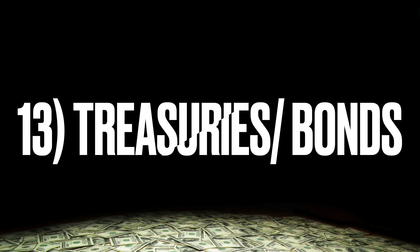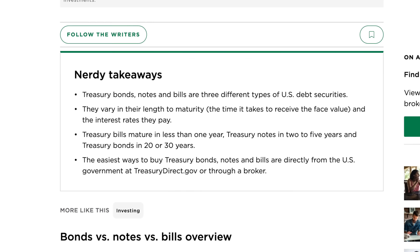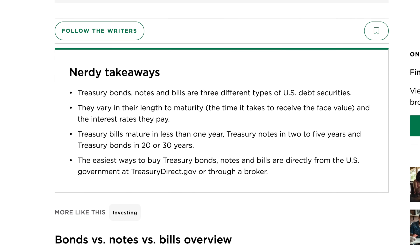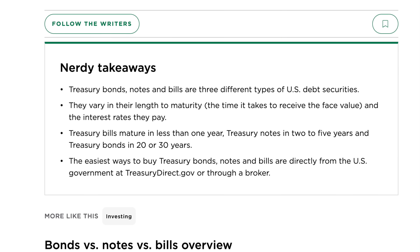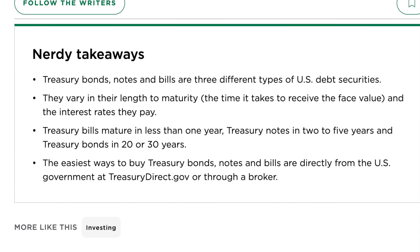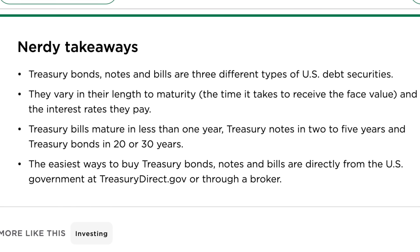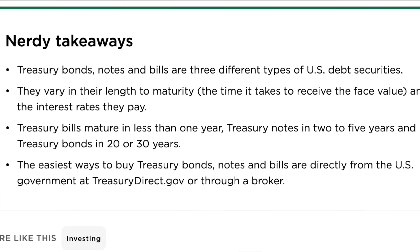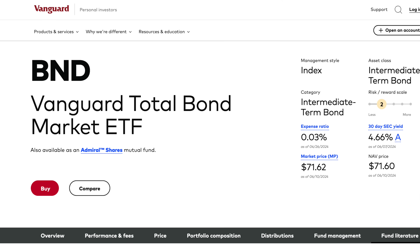Next is the idea of treasuries or bonds. Treasury bonds, notes, and bills are three different types of U.S. debt securities that vary in their length to maturity and the interest rates they pay. Treasury bills mature in less than one year, treasury notes in two to five years, and treasury bonds in 20 or 30 years. The easiest way to buy them is directly from the U.S. government at treasurydirect.gov or through a broker. You're probably also invested in bonds through an ETF or mutual fund in your 401k. Bonds are a good way to stabilize your money — less volatile than stocks, but they won't grow much, so they're better for preserving wealth than building it.